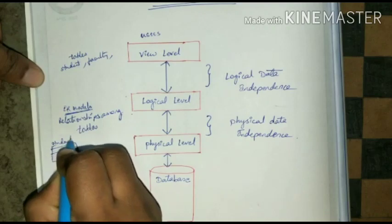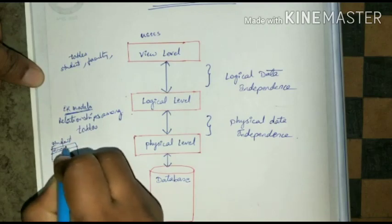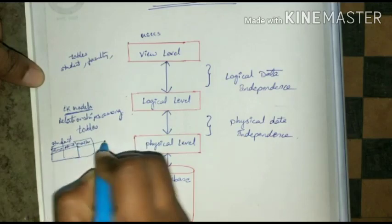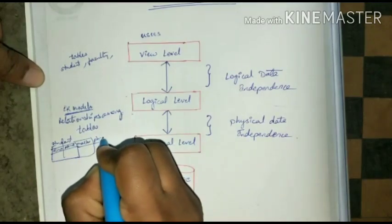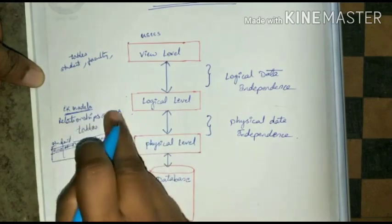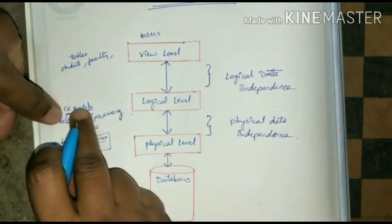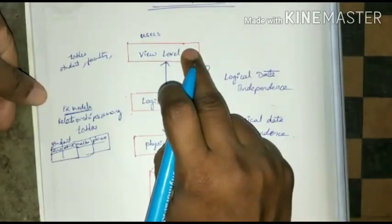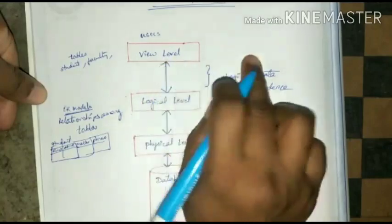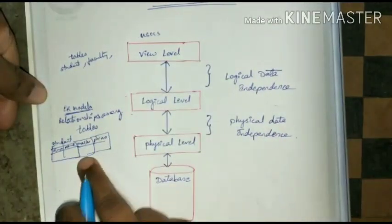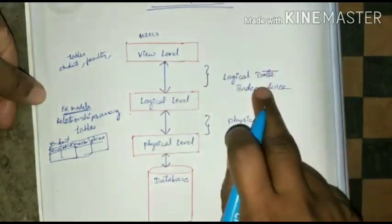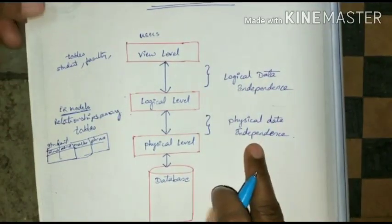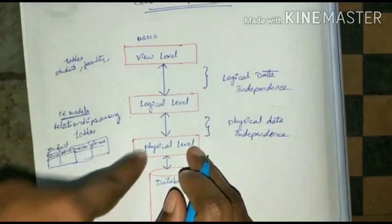For example, in a student table, if the student structure changes — like a student table has role number, name, and marks as three columns — and if I add a fourth column also, the view level will be independent of that change. That is logical data independence.